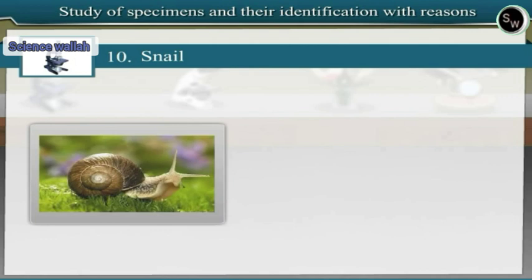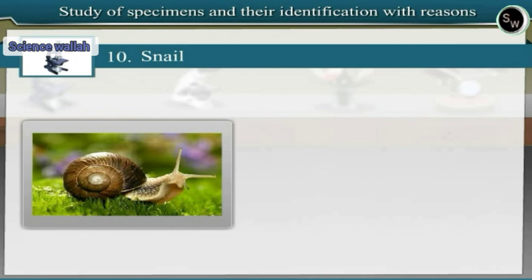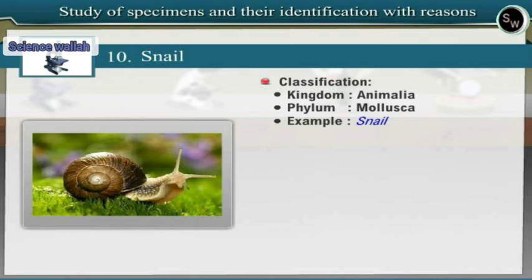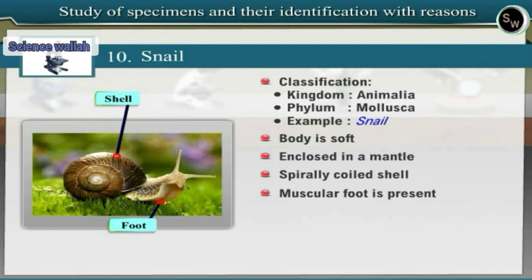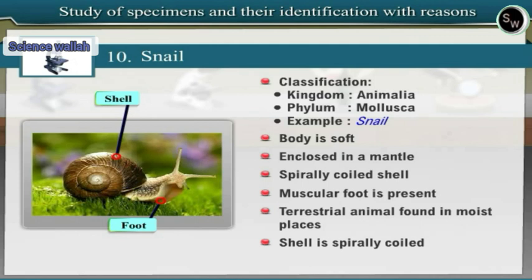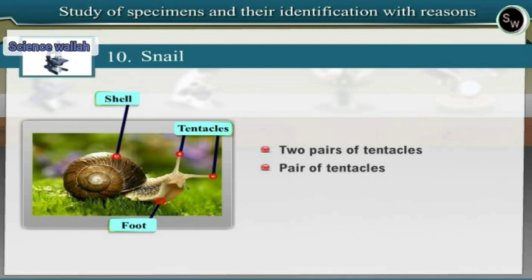Specimen 10: Snail. Observe a fresh or preserved specimen of snail. Snail belongs to phylum Mollusca in Kingdom Animalia. The body is soft and enclosed in a mantle, with a spirally coiled shell and muscular foot, therefore snail is included under phylum Mollusca. Snail is a terrestrial animal found in moist places like gardens or under leaves. The shell is spirally coiled, external and situated posteriorly. The operculum is absent. Snail possesses two pairs of tentacles; the posterior pair are larger and bear eyes near their tips. The foot is flat and large, used for creeping.